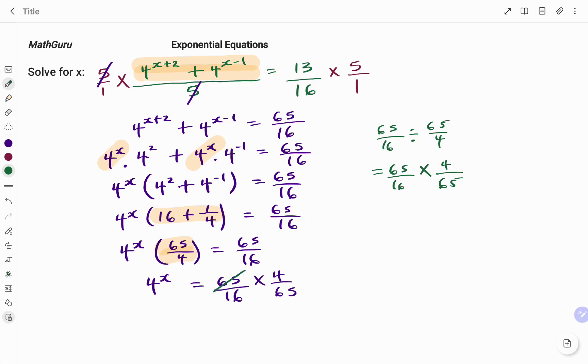Simplifying that, I have 65 divided by 65, that's 1. And then I have 4 in 4, 1. 4 in 16, 4. So therefore, that will be 1 over 4.